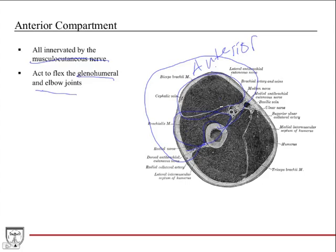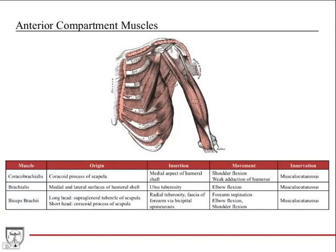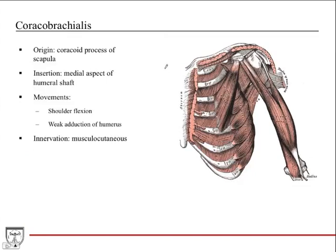An important spatial relationship to be aware of: the median nerve and brachial artery travel together between the brachialis and the biceps brachii muscle. There are three muscles in the anterior compartment, organized by origin, insertion, movement, and innervation.